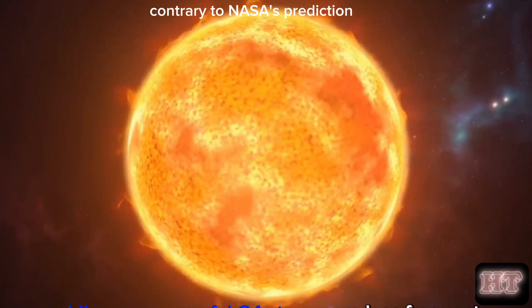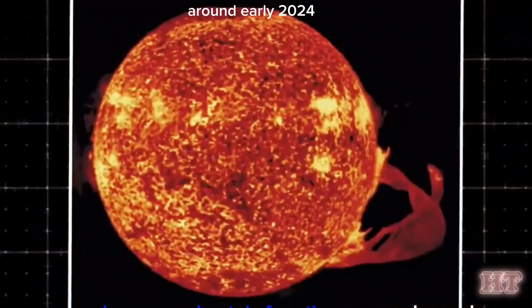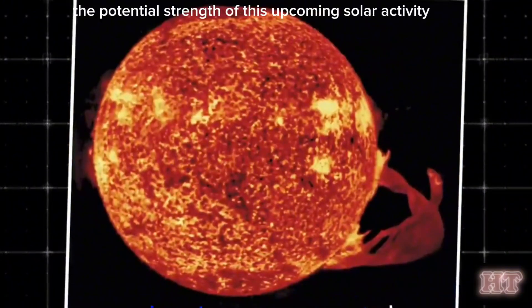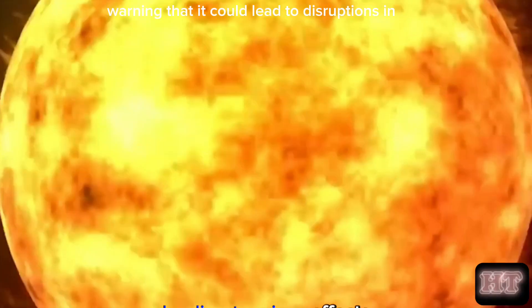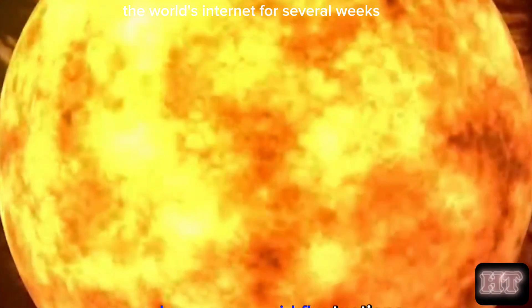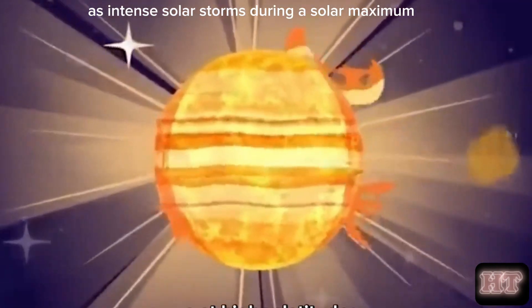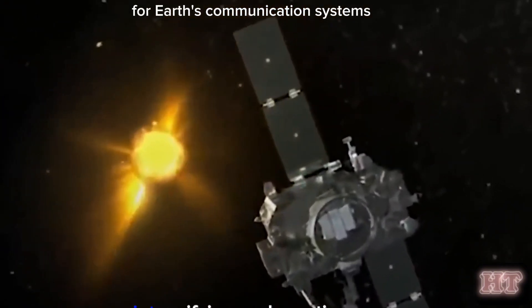Contrary to NASA's prediction, Indian astronomers now suggest that the next solar maximum might arrive earlier than expected, around early 2024. Their concern is the potential strength of this upcoming solar activity, warning that it could lead to disruptions in the world's internet for several weeks. This is particularly worrisome, as intense solar storms during a solar maximum can cause significant issues for Earth's communication systems.